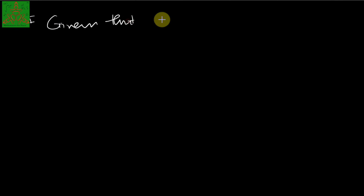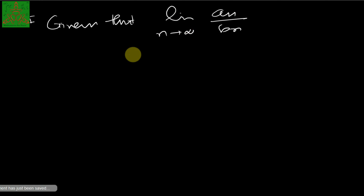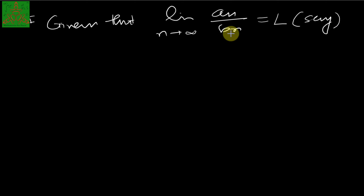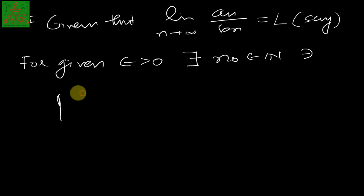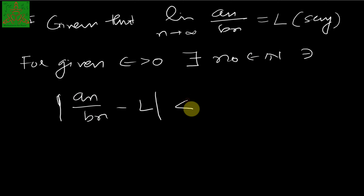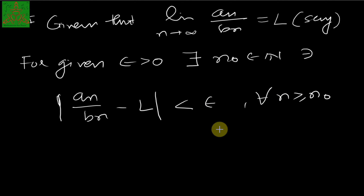Given that the limit of An upon Bn as n tends to infinity exists and is unique, let us say it equals L. So now, as per the definition of the limit, for a given epsilon greater than 0, there exists N₀ belonging to ℕ such that |An/Bn − L| < epsilon for every n greater than or equal to N₀.